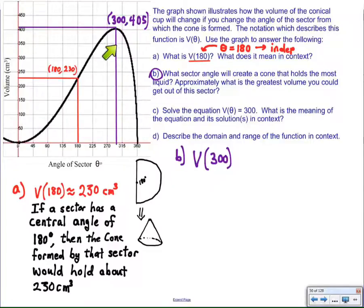Then, I follow the graph down from that point to determine the angle, and here again, I estimate around 300 degrees. So, I'm saying that V of 300 is approximately 405 centimeters. An important point to make here is, actually no, that point is for part C, so I'll get to that in just a moment.